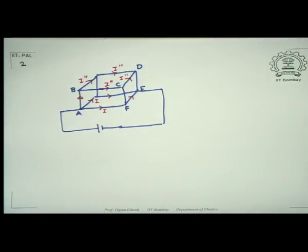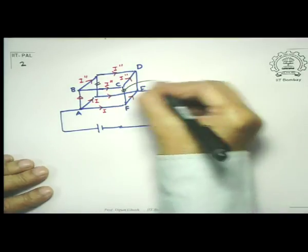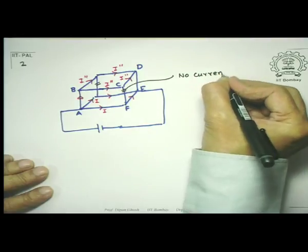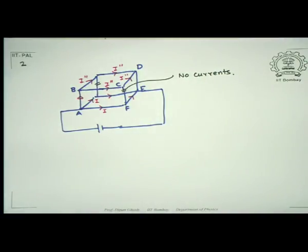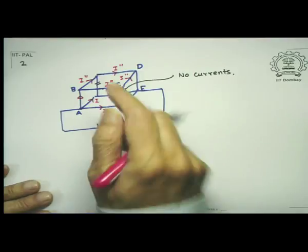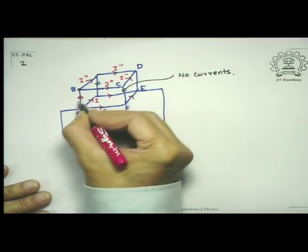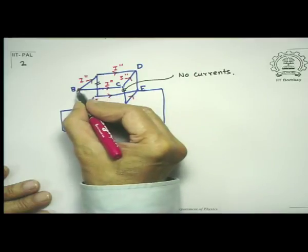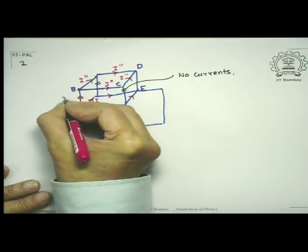Notice something interesting: there are two paths in this network where there are no currents — this conductor and that conductor carry no current. In other words, even if you removed them, they would not participate in the circuit. This is the major difference from the previous case. By the junction rule, the current coming into point B must equal the sum of the two currents moving out, so that current must be 2 I double prime.